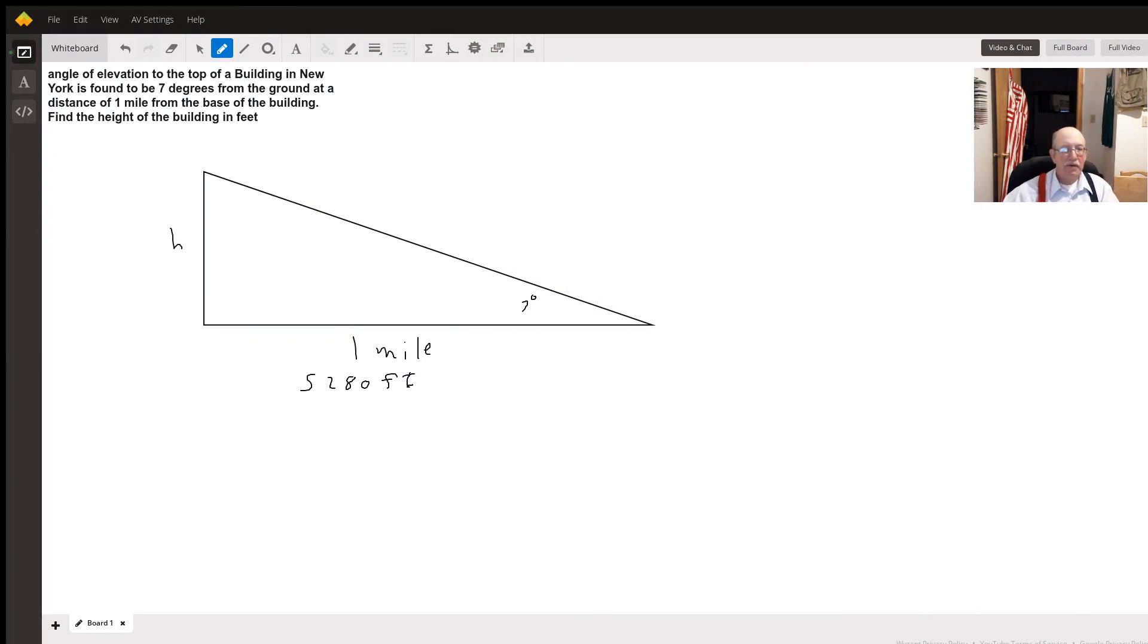Hello, well all we've got is a right triangle since we're given the angle of elevation. Angle of elevation is like you're on the ground looking up at something. That's seven degrees. The distance to the Empire State Building is one mile.